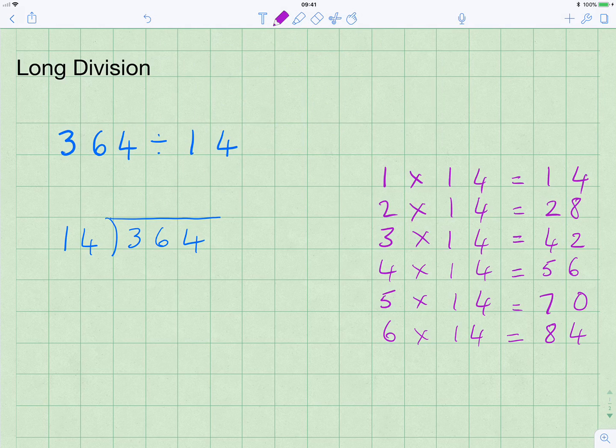The first question we need to ask is how many times does 14 go into 3? Well, 14 doesn't go into 3. How many times does 14 go into 36? Two 14s are 28 and three 14s are 42, so it's going to be somewhere between 2 and 3. But we're doing this in whole numbers, so we go with the lower one, which is 2. So we say 14 goes into 36 twice.